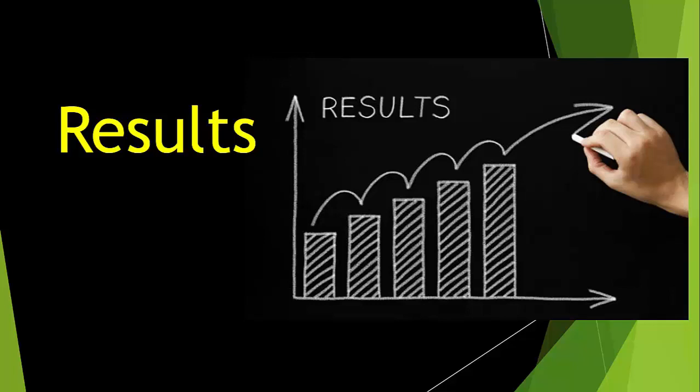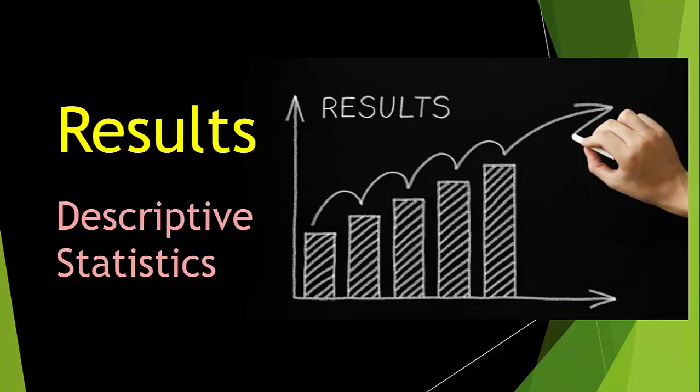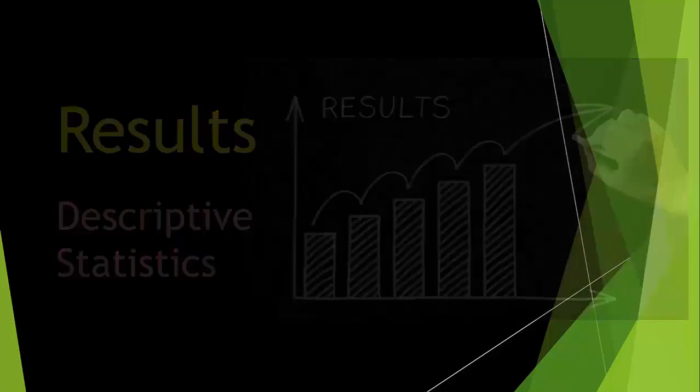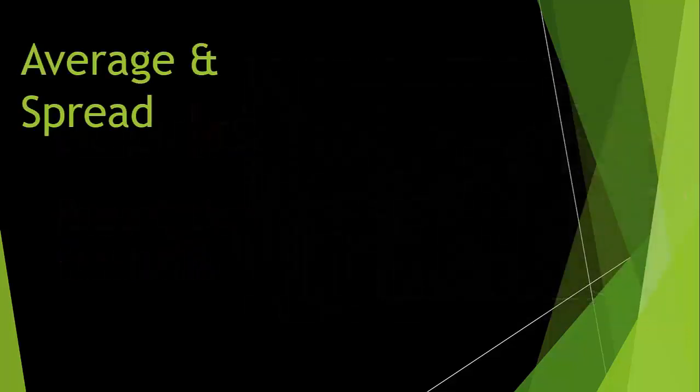Next, we move on to the results section. All quantitative research should have some descriptive statistics presented, e.g. the averages and spreads of all the variables measured, as well as perhaps other summarizing items such as tables, bar charts and pie charts. Now when reading the results section, we need to consider if, for their measures of average and spread, do you agree with their choice?